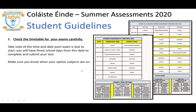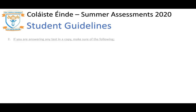Make sure you know when your option subjects are on — this is very easy to do. Look at your class timetable in the back of your homework journal. For example, where fourth years have a double period three and four on a Thursday, that's called four option one. Locate that on your exam timetable — on Monday the 18th, fourth years will have those option subjects available to them. This helps you plan a revision timetable and maximize your time wisely and effectively.